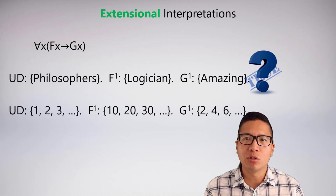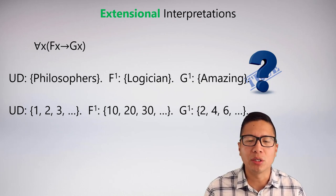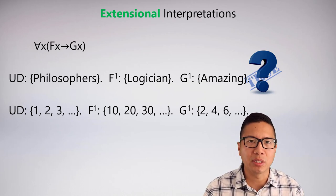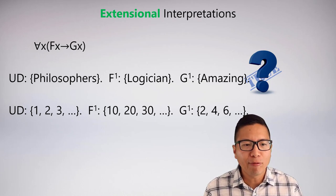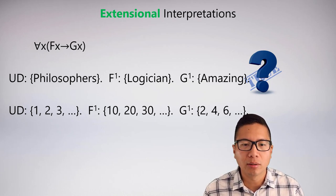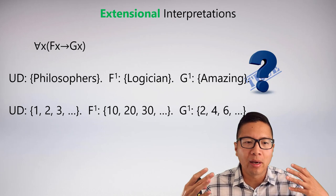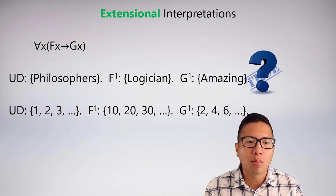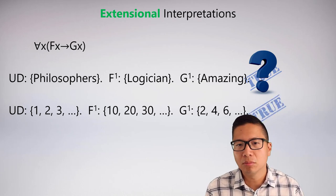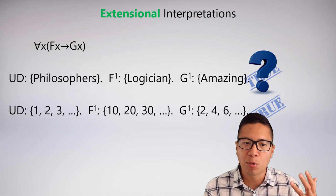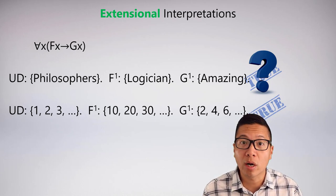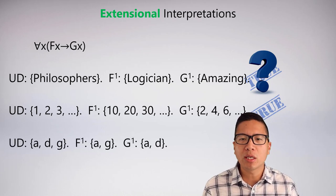Here's a more precise extensional interpretation using dot-dot-dot notation. The UD is {1, 2, 3, ...} — the natural numbers. F is {10, 20, 30, ...} — multiples of 10 — and G is {2, 4, 6, ...} — even numbers. So the sentence says 'all multiples of 10 are even.' That's true! And we can state it both intentionally and extensionally, which is a nice feature mathematics has.